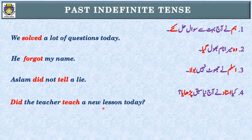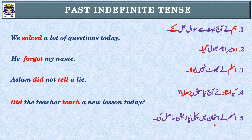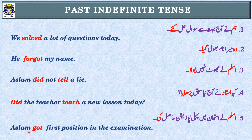Sentence number five: 'Aslam got first position in the examination.' First step: identification of tense — past indefinite tense. Second step: the subject is 'Aslam.' In past indefinite tense, whatever the subject, we use the second form: 'Aslam got first position in the examination.' Note: with first, second, or third position, grammarians say we do not use 'the.'